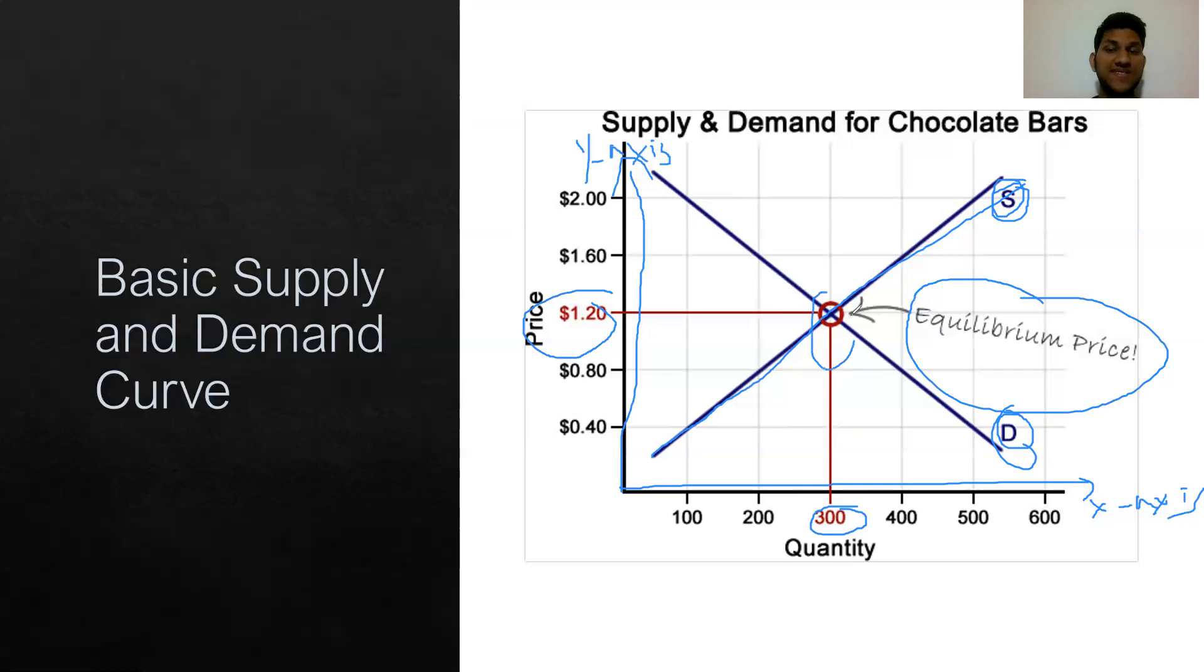This is the optimal point at which we should be producing and demanding because that is the point at which supply and demand is equal. That means if you were to set a price for chocolate bars, you should set it at $1.20. This is the equilibrium price. This is the price where supply and demand are equal, and that's the good price for society to have chocolate bars at.